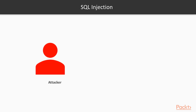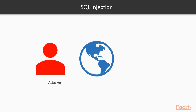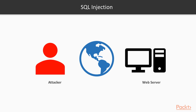The process is quite simple. First, the attacker uses the internet and sends a malicious query to the web server of the target website. Second, the web server processes that query. Third, the web server fetches all available information and provides it directly to the attacker, who can then use that information for harmful purposes. This is the basic process of SQL injection.